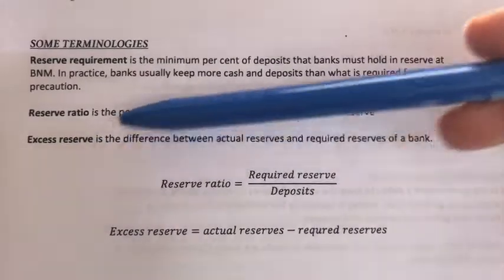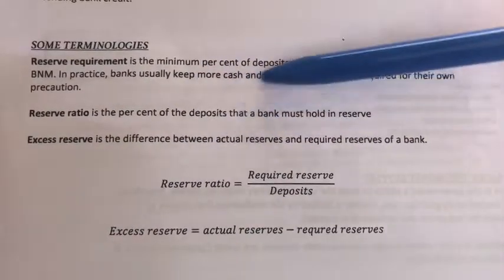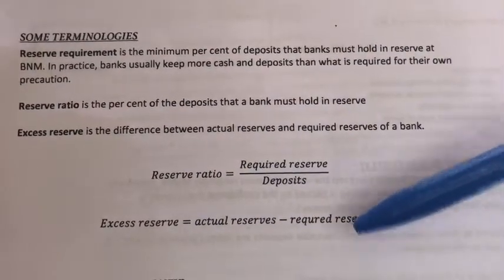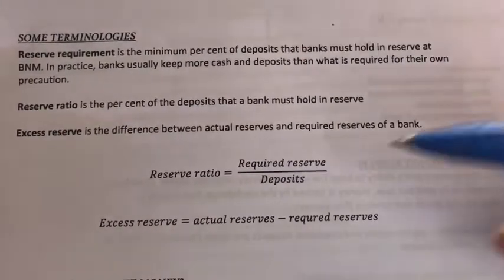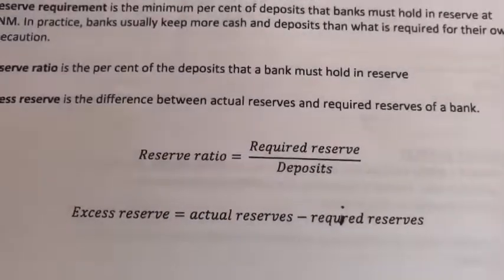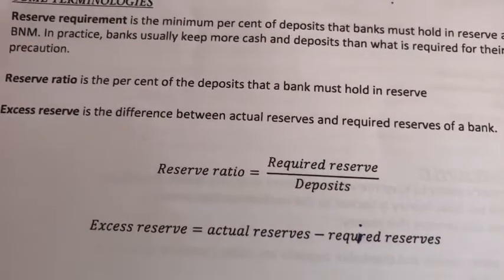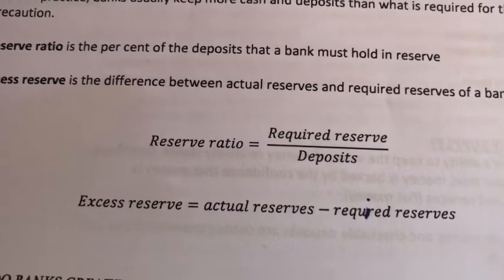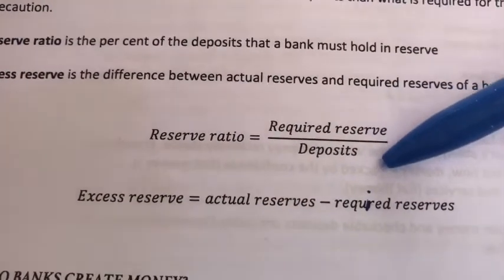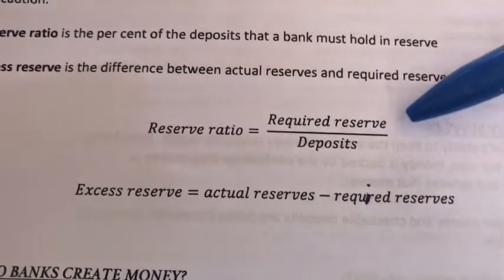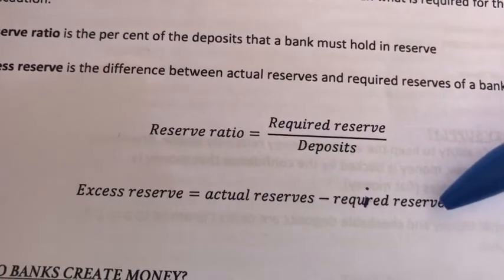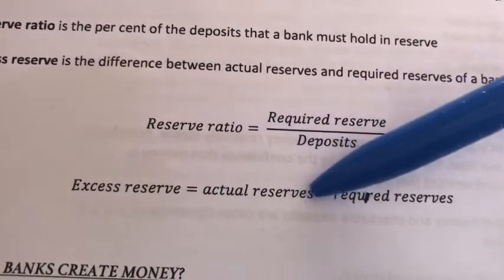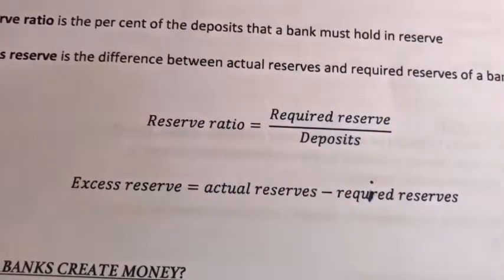And then we have the excess reserve. Banks usually keep more in reserve, so you take the difference between their actual reserves and the required amount. Let's take a look at this formula again. The required reserve is basically the amount of reserves that the bank must deposit with the central bank to meet the legal reserve requirement, divided by the bank's total deposits. So whatever the bank actually keeps as reserve — since banks normally keep more than required — actual reserves minus required reserve gives you the bank's excess reserves.